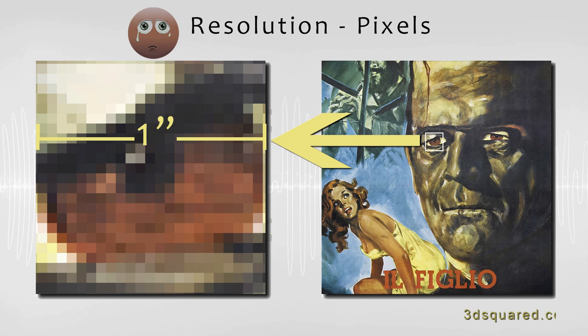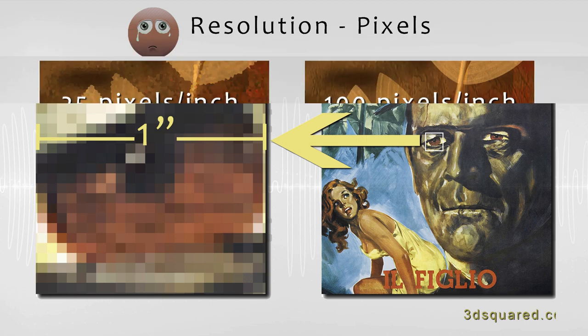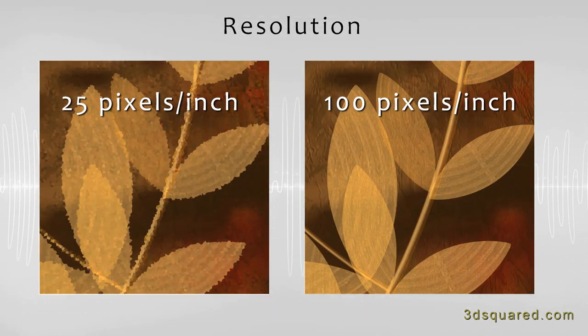And speaking of resolution, let's talk about that. Resolution is measured in pixels — the more pixels we have per square inch, the sharper the image will be. The image on the left only has 25 pixels per inch and you can see the jagged edges, while the image on the right has 100 pixels per inch and it's a much sharper image.